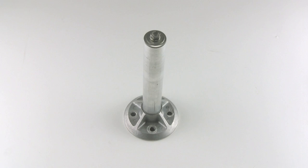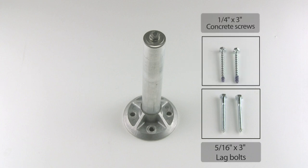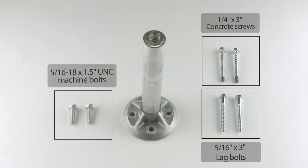Each of these types of substrate requires a different kind of fastener. The low-slope mount comes packaged with a pair of 3-inch lag bolts, and these are used for attaching the mount to a wooden structure. If you core through the insulation and find concrete, you're going to need to use quarter-inch concrete screws. If you're mounting to a steel substrate, you're going to need 5-16-18 UNC machine bolts.